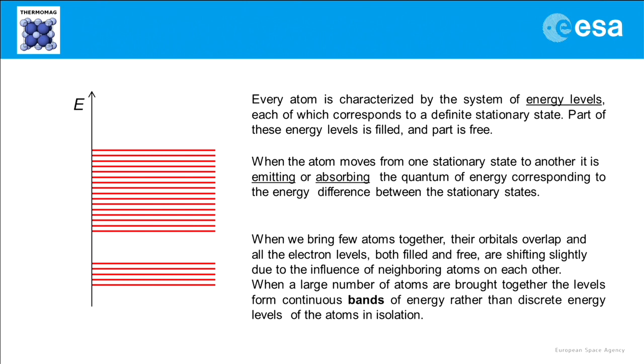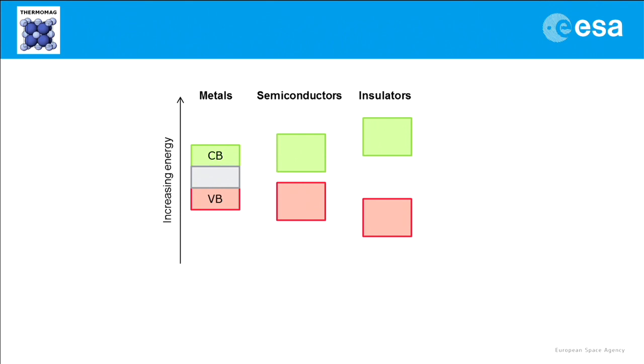The energy ranges with no orbitals form so-called band gaps. The top of the collection of electron energy levels occupied at absolute zero temperature is called the valence band, and the lowest band with unoccupied states is called the conduction band. As we know from the previous lecture, semiconductors are potentially good thermoelectrics. Their conduction band and valence band are not overlapping as in the case of metals, but the band gap is not so big as for insulators, so it can be overcome by an electron.